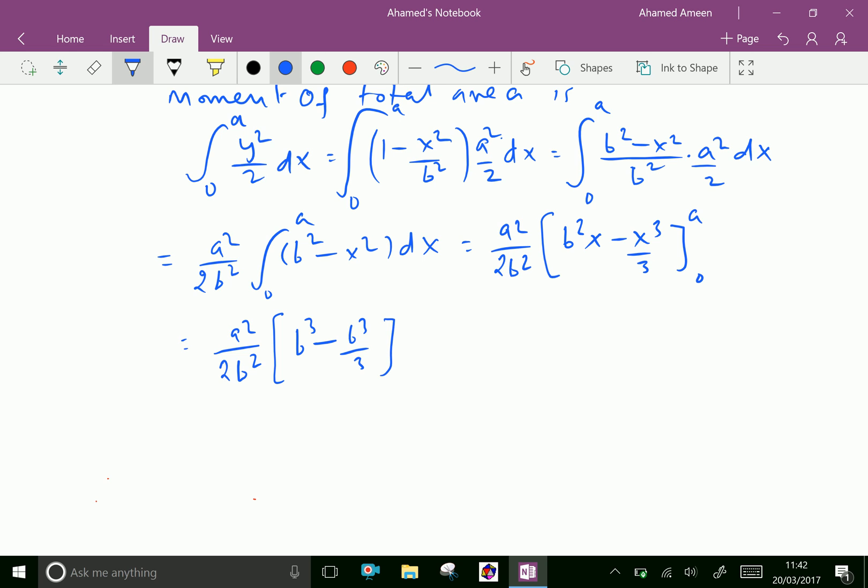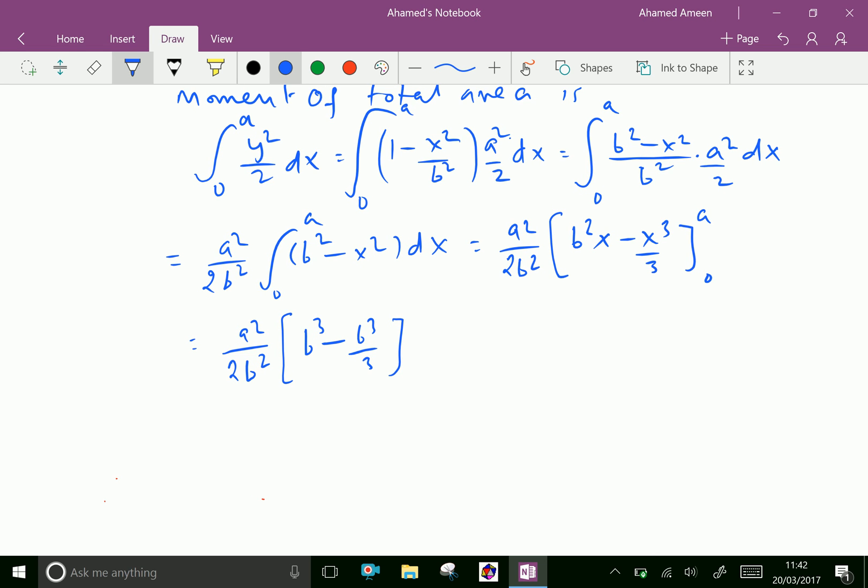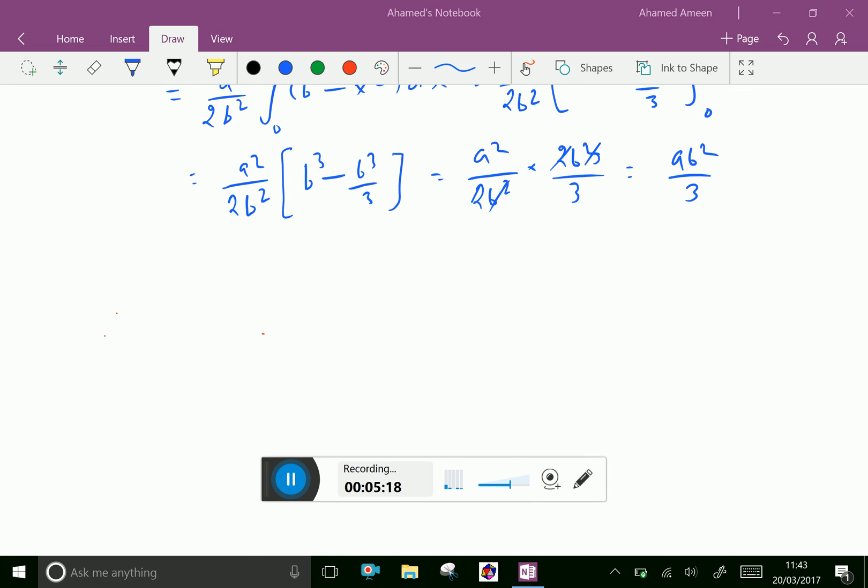The 0 limit has no effect. Therefore, which equals a squared over 2 b squared times (3 b squared a minus a cubed) over 3, which simplifies to a squared b squared over 3. After canceling terms, we get a b squared over 3. Let this be equation 1.